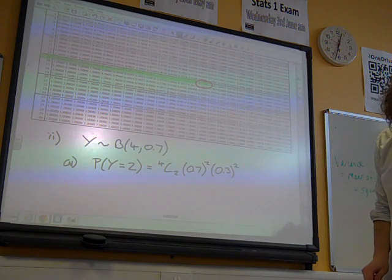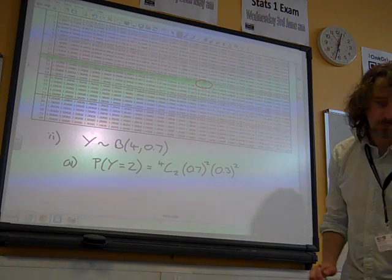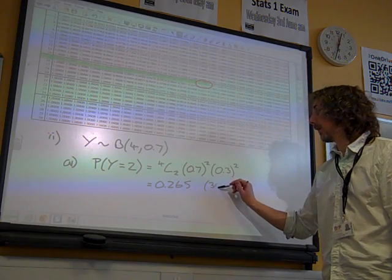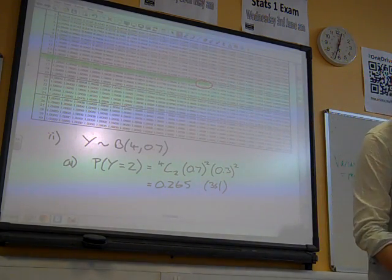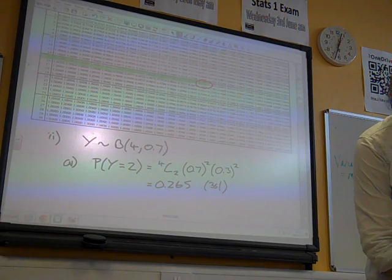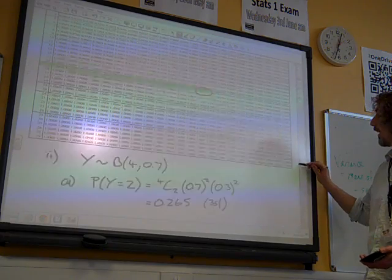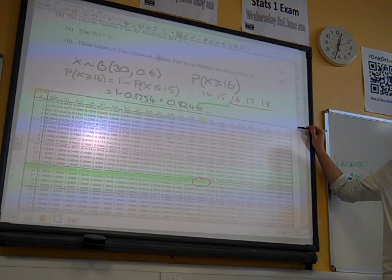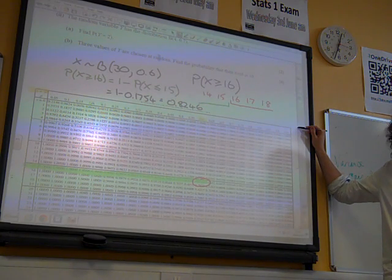Stick that in the calculator and we get something like 0.265. Think to three significant figures. There we go. Right. Now, the next bit of the question said, three values of y are chosen at random.